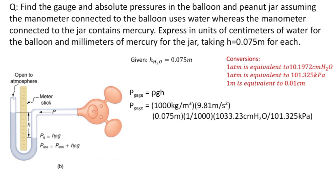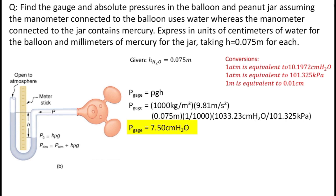Since we need to express the unit in centimeters of water, we use the conversion: 1 atm equals 1,033.23 centimeters of water, and 1 atm also equals 101.325 kilopascals. Therefore, 1,033.23 cm of water equals 101.325 kPa. Using this conversion, the gauge pressure equals 7.50 centimeters of water.